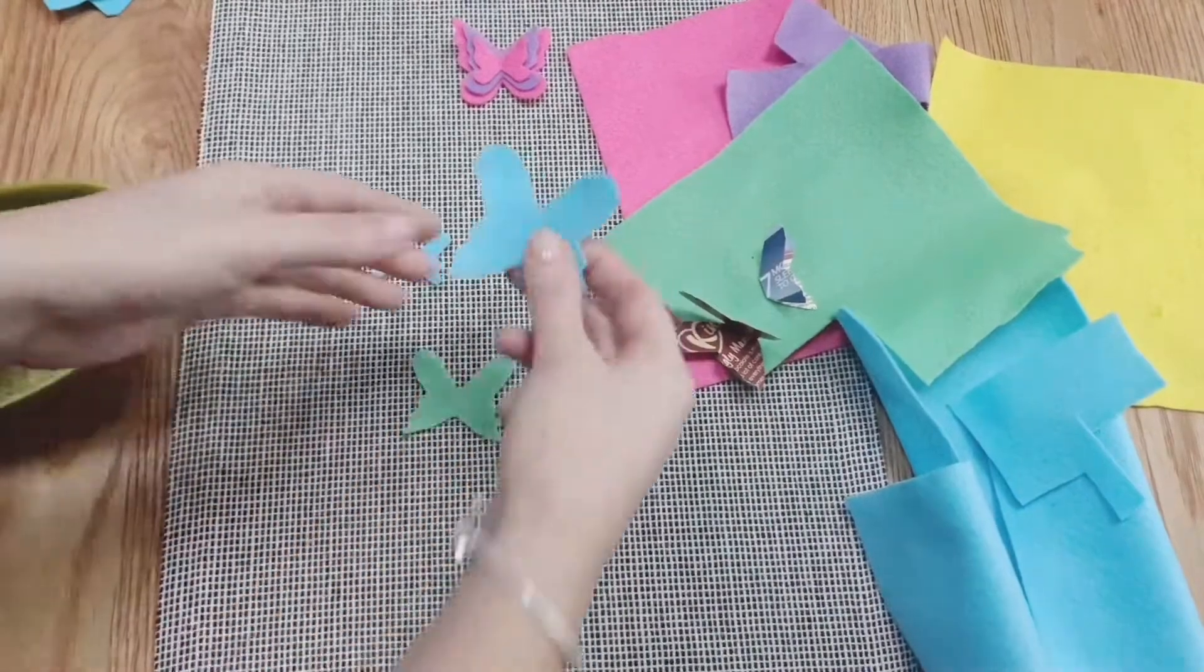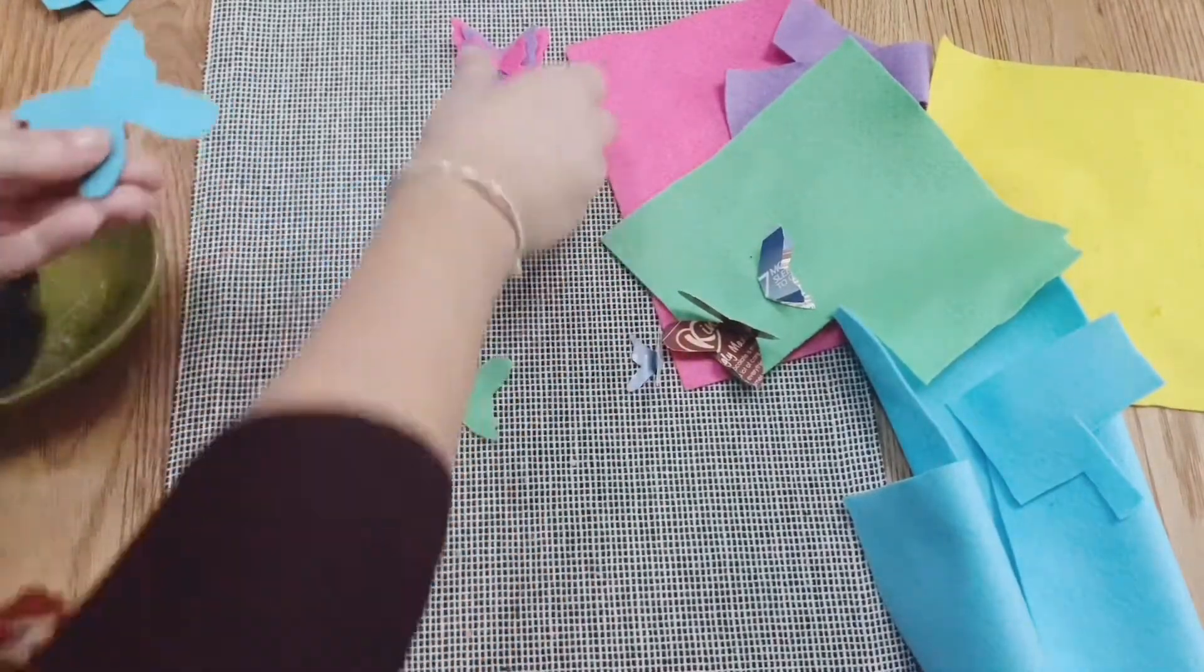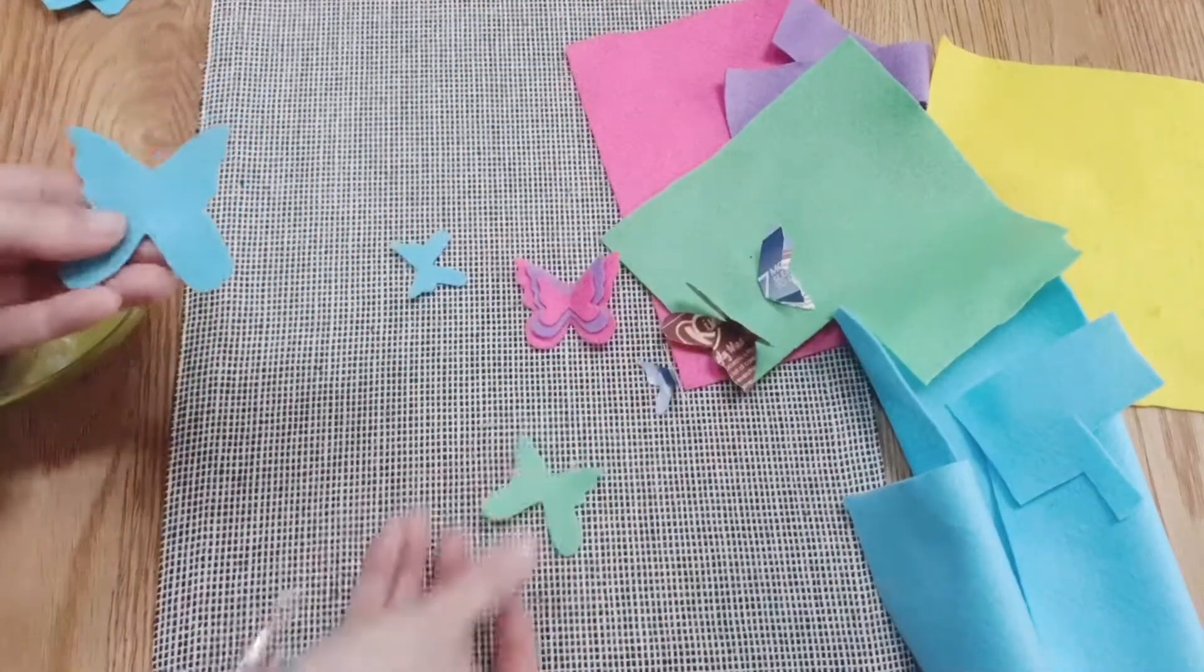So with your three shapes cut out, we just need to assemble them now. There you go, put them upside down, there we go.